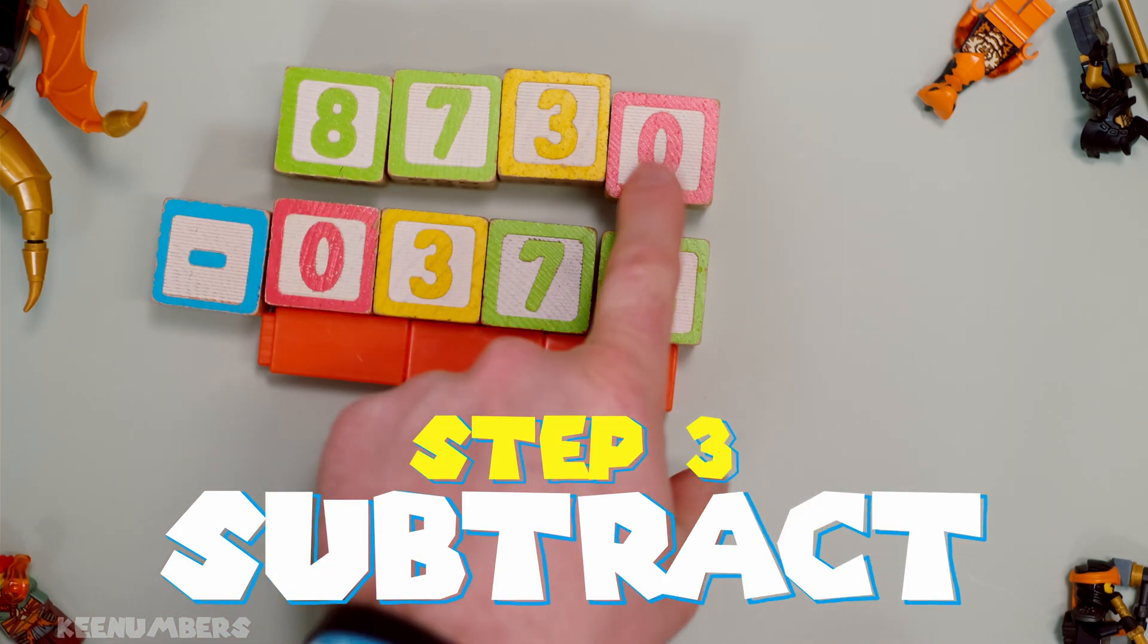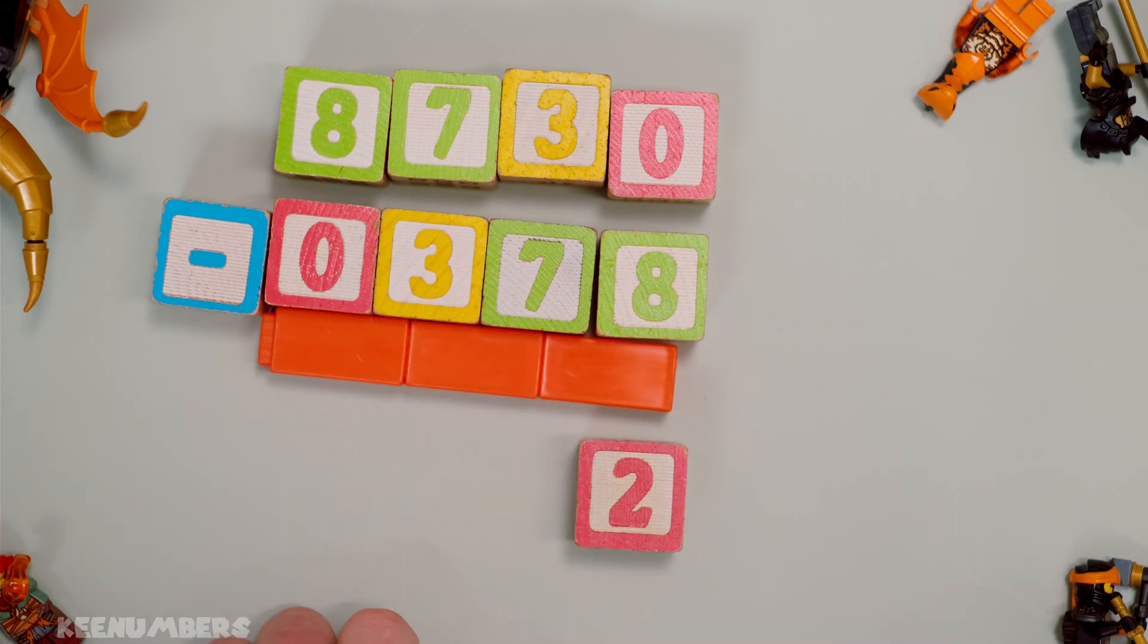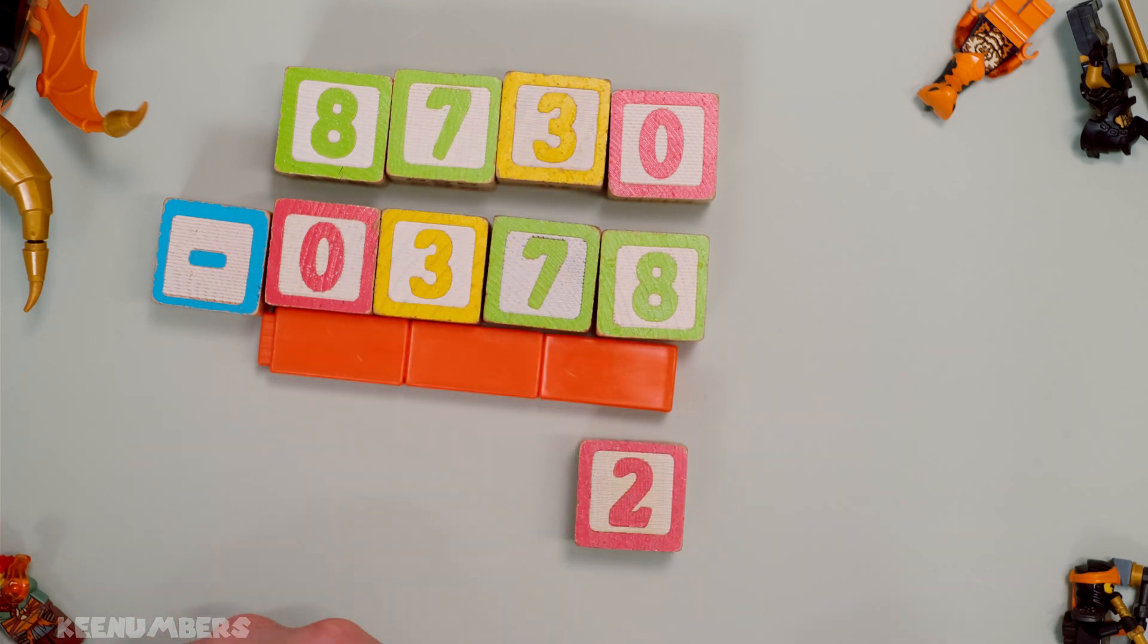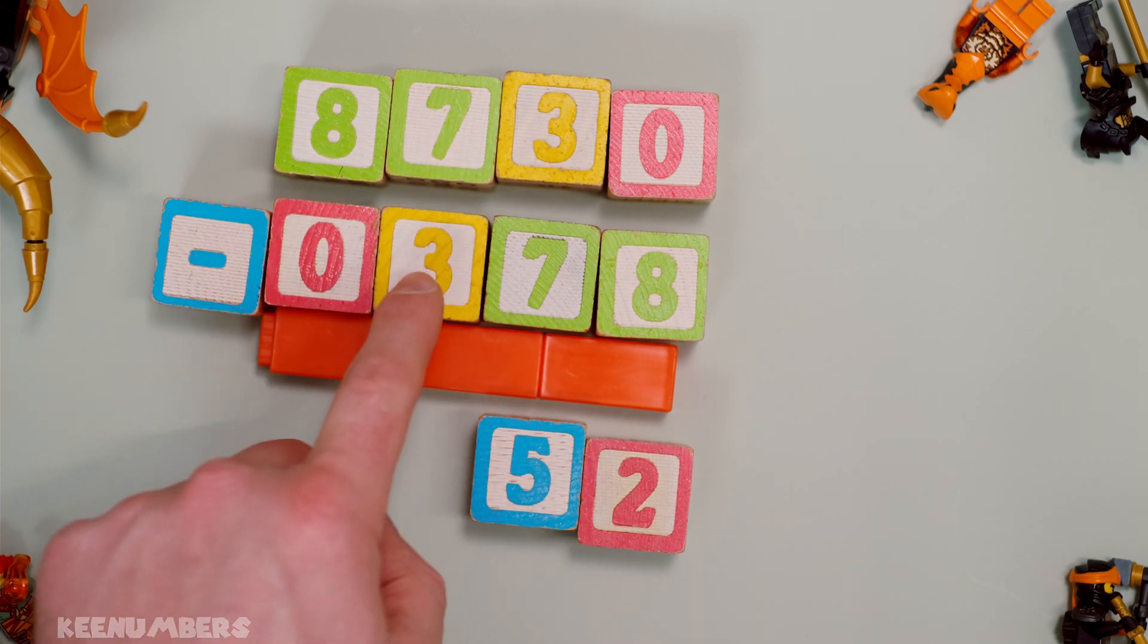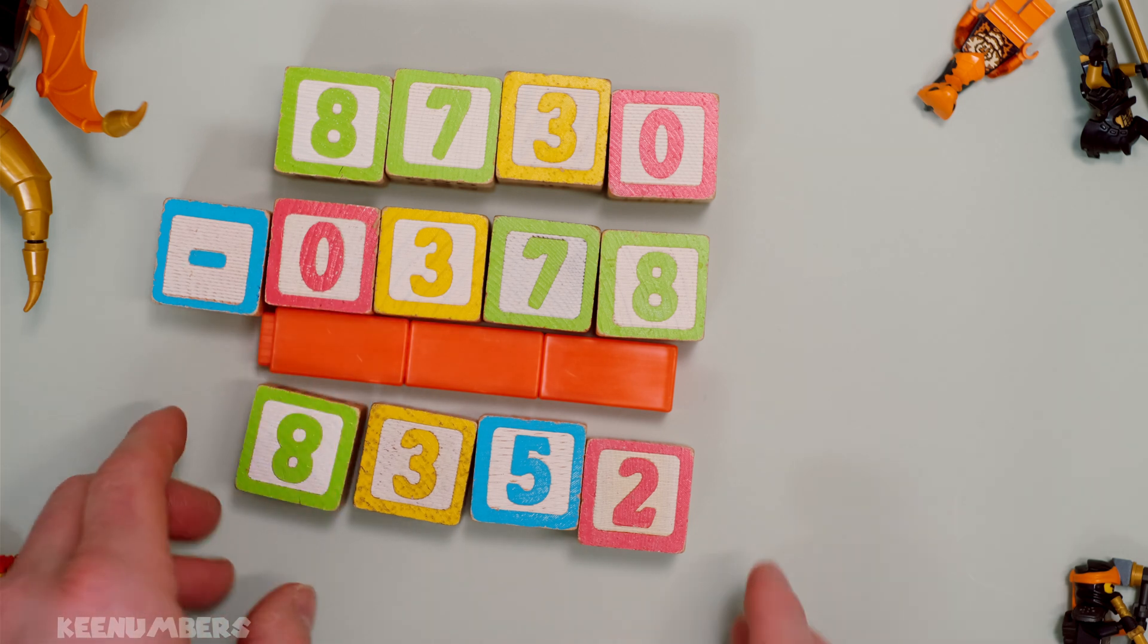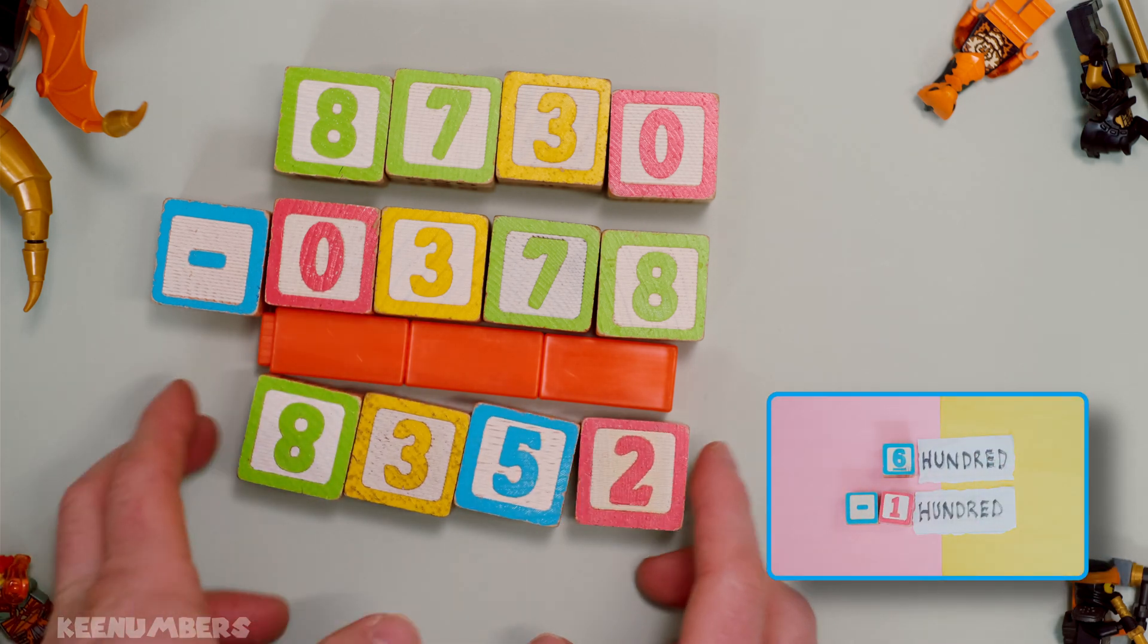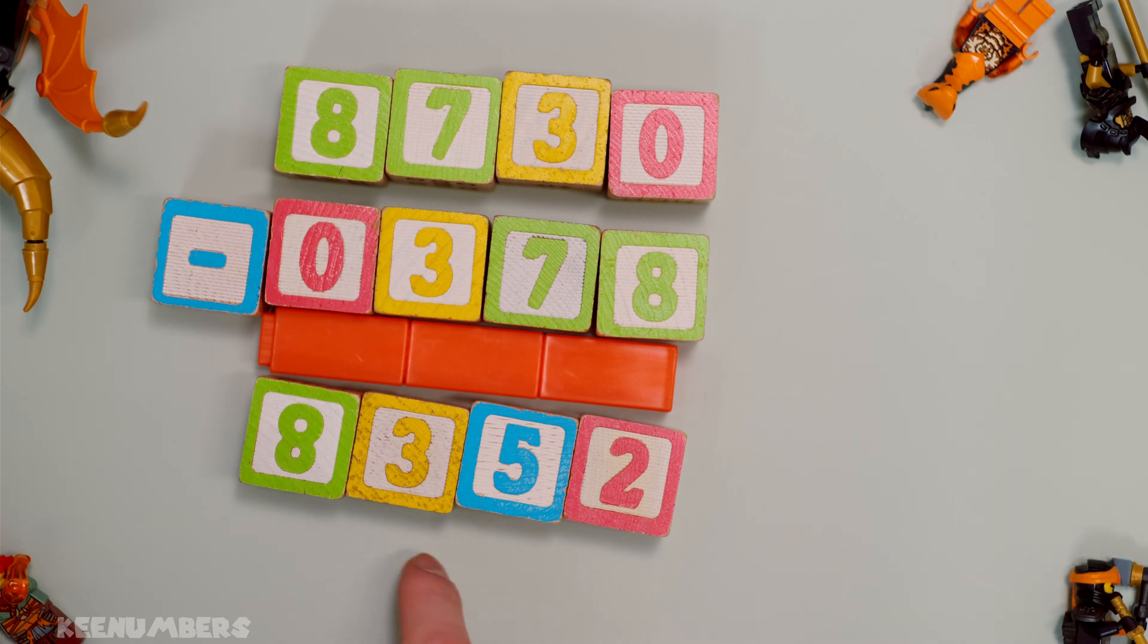All right, let's subtract. That's really 10 minus eight or two. And then this is really two minus seven or 12 minus seven. So that's five. Now we have seven minus three, but we had to take away one from this spot. So it's really six minus three or 352. And then eight minus zero is simply eight. If you need to review how to do subtraction, you can do it left to right or right to left in the videos. Link below.